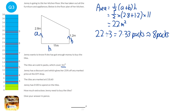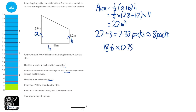The next thing we look at is the fact that Jenny has a 25% discount. So we need to find out what a 25% discount would do to the £18.60 for the pack of tiles. We're going to get the £18.60 and times it by 0.75 — finding three quarters of it because she has a 25% discount. That would be £13.95, so the tiles are going to cost £13.95 per pack.